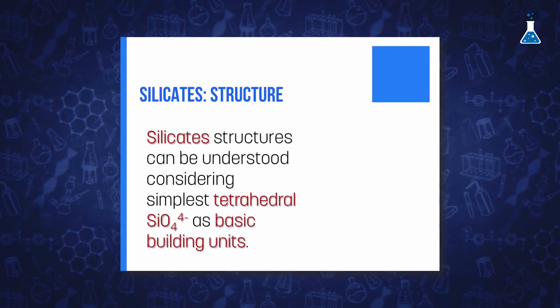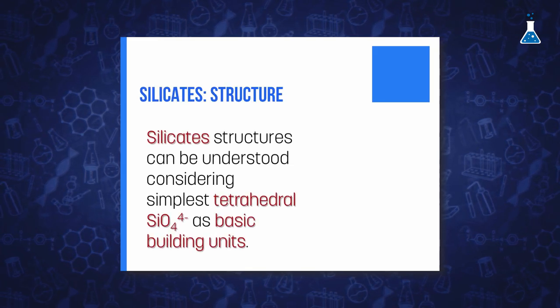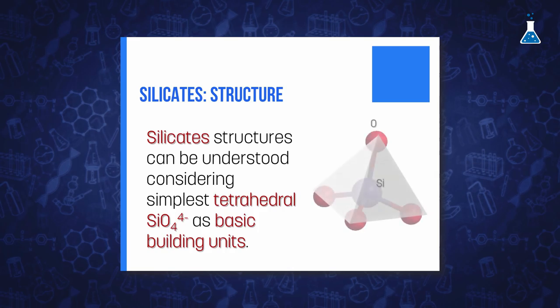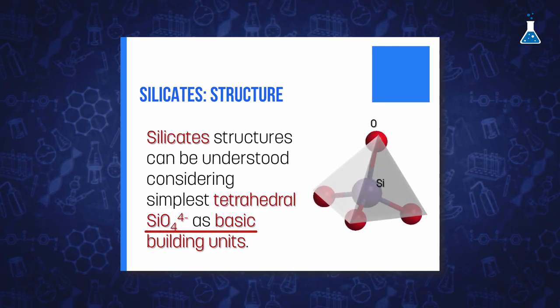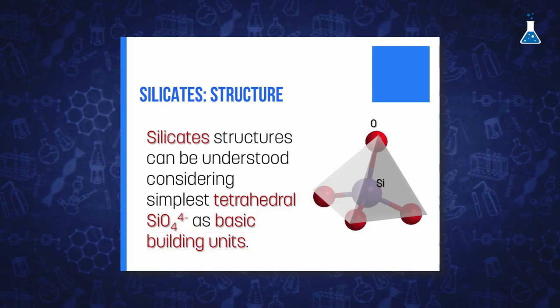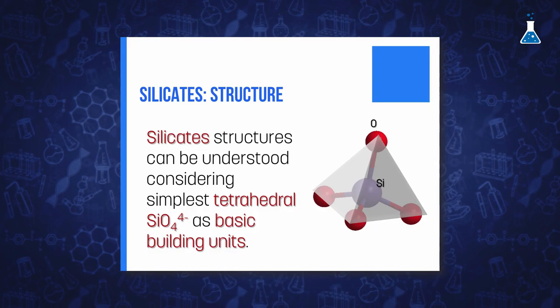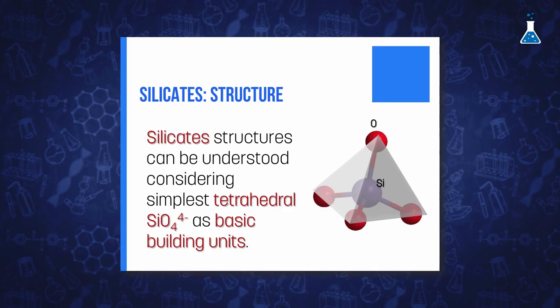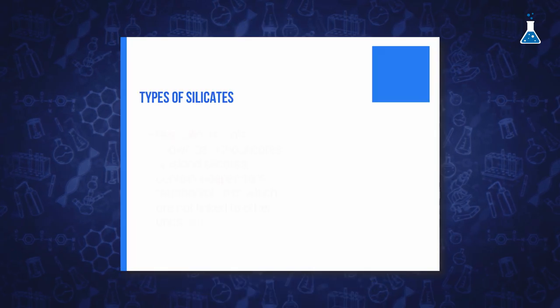The complicated silicate structure can be easily understood considering the simple tetrahedral SiO4 unit from which they are built in a similar way we have already seen with silica. Each tetrahedral unit contains a silicon atom at the center and four oxygen atoms at the vertices. However, silicate chemistry is much more complex, and different types of silicates are recognized on the basis of the degree of polymerization of these tetrahedral units.